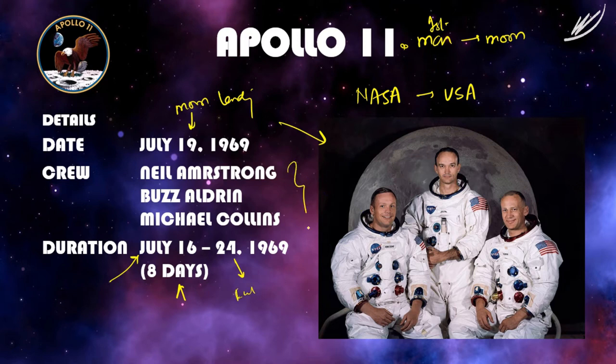The main crew members were Neil Armstrong, Buzz Aldrin, and Michael Collins. If you see on the top left corner, this was the insignia that Apollo mission 11 was designated with, and this insignia was mainly designed by Neil Armstrong. NASA allows the main crew members to design their own insignia for the mission.